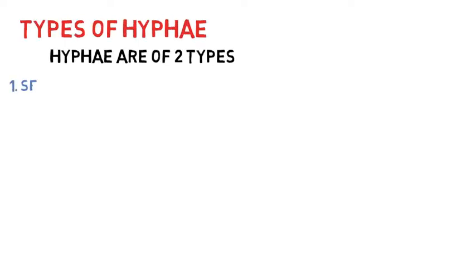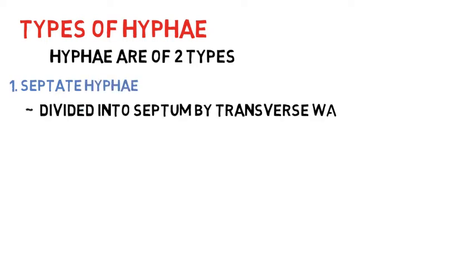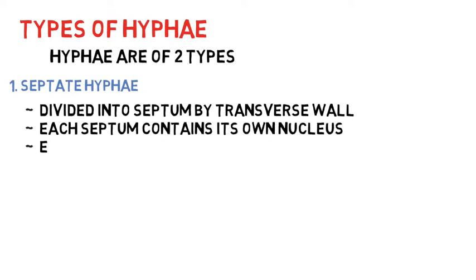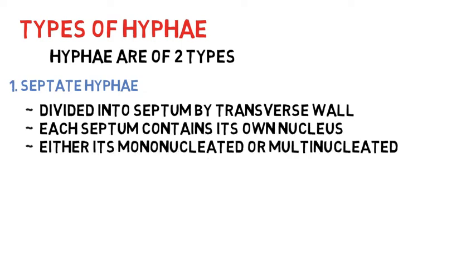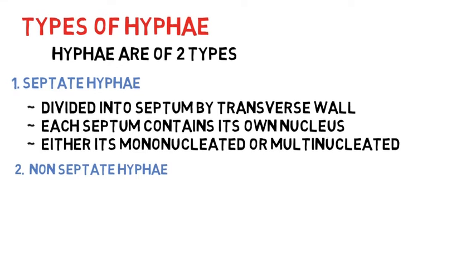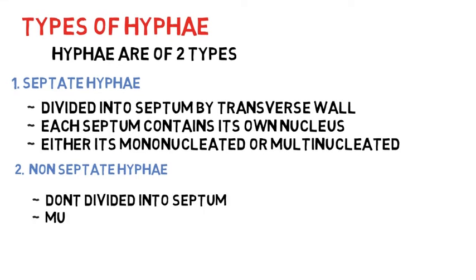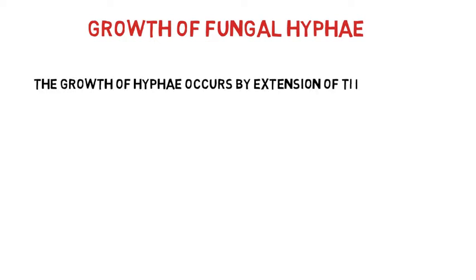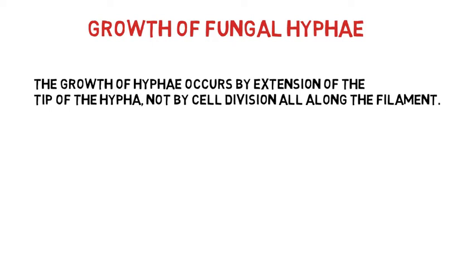There are two types of hyphae: septate and non-septate. Septate hyphae are divided into segments by transverse walls called septums; each septum contains its own nucleus, either mononucleated or multinucleated. Non-septate hyphae are not divided into septums and are multinucleated. The growth of fungal hyphae does not take place by cell division all along the filament; instead, extension of the tip of the hyphae is responsible for their growth.